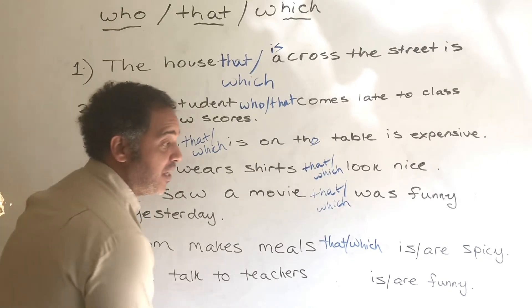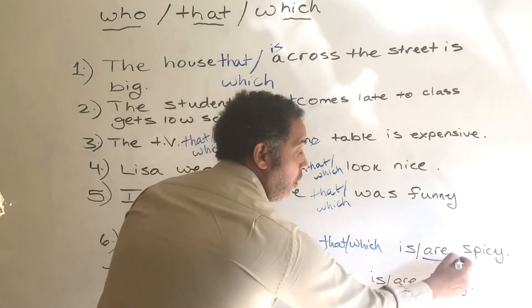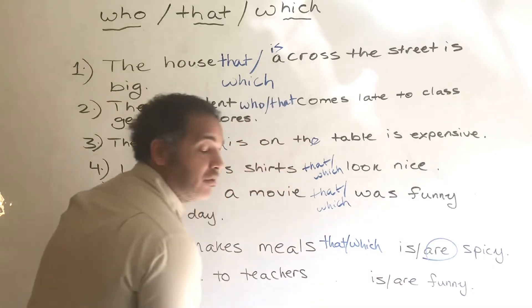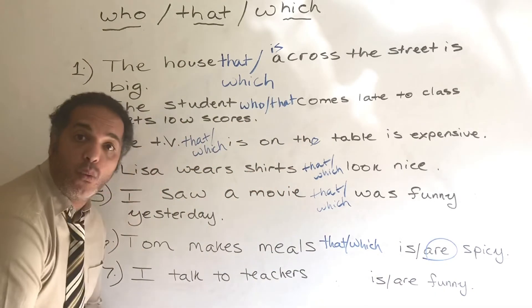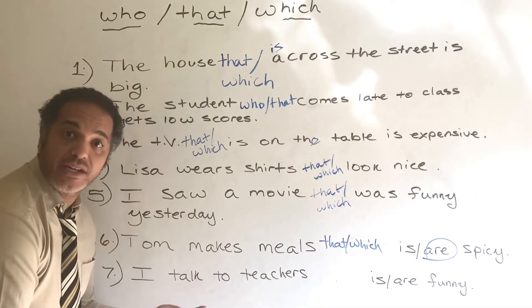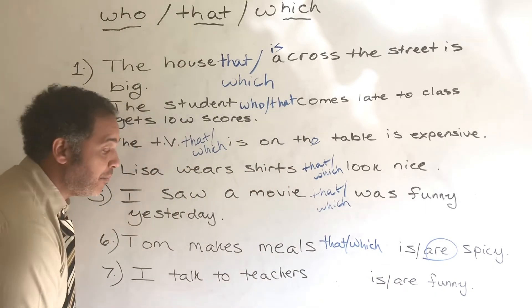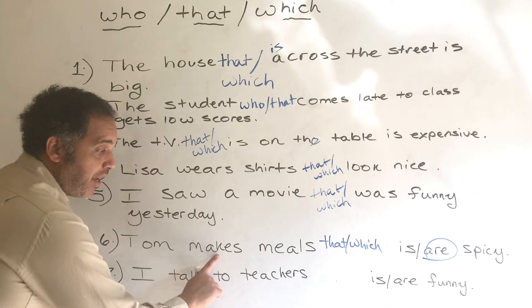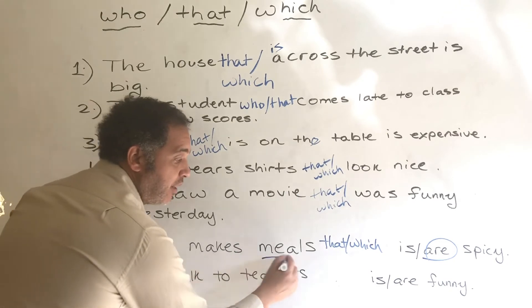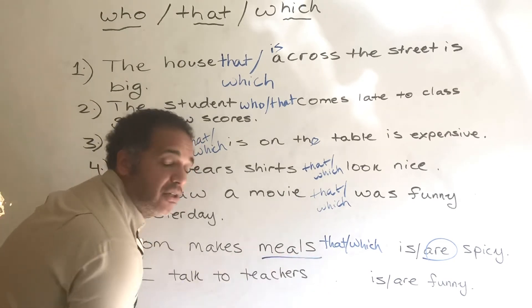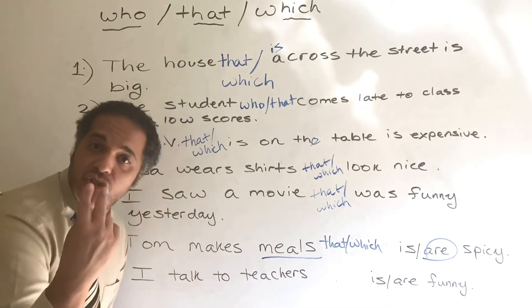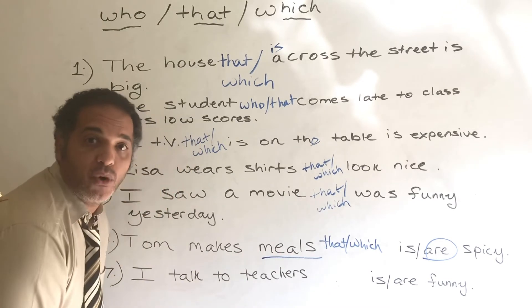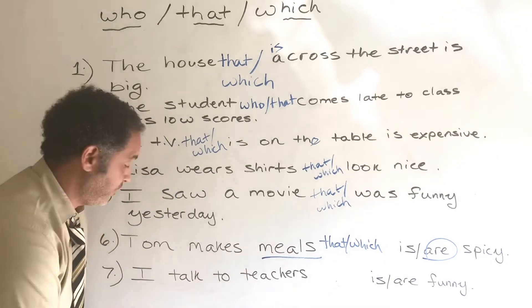It should be 'are.' Why is it 'are'? Because we say 'Tom makes meals' — 'meals' is two or more, so it's 'are.'